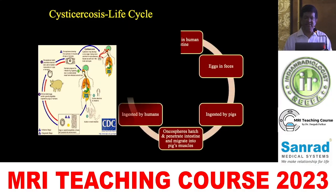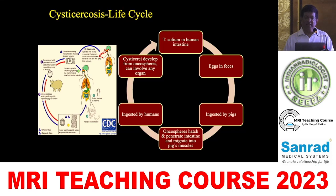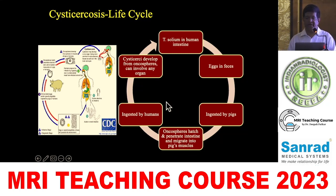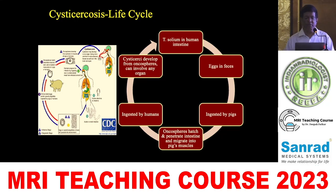Let's move on to cysticercosis. We know the life cycle: Taenia solium in the human intestine lays eggs in the feces. They are ingested by pigs, or they can get into uncooked salads. The oncospheres get hatched and penetrate the intestine, migrating into pigs' muscles. If partially cooked meat or untreated salad is ingested by humans, cysticerci are developed from oncospheres and can involve any organ of the human body.